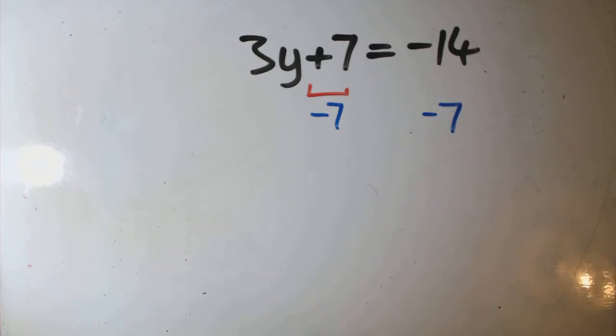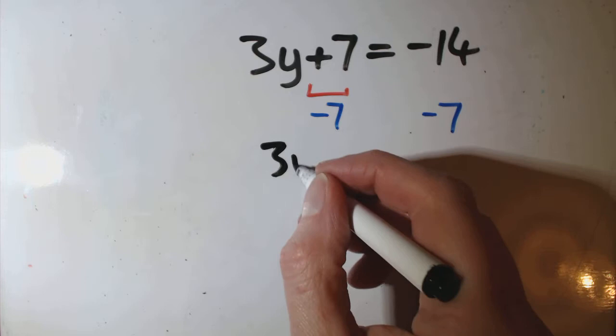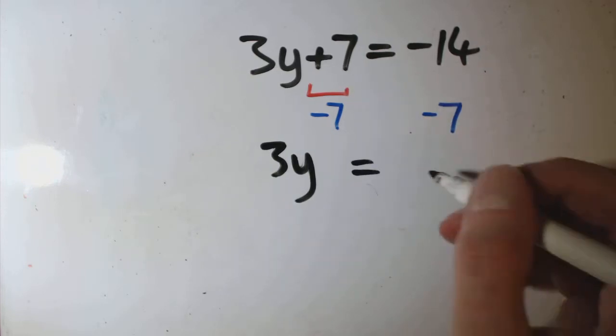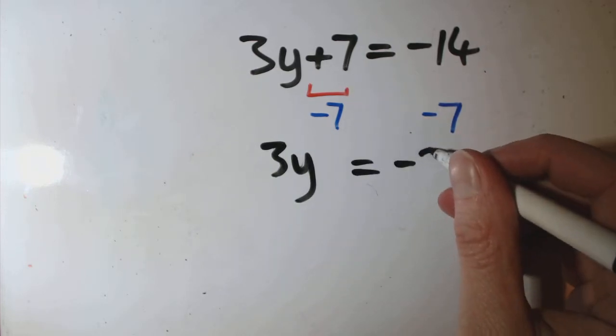So what we've got is 3y, 7 minus 7, 0 equals, and it's minus 21.